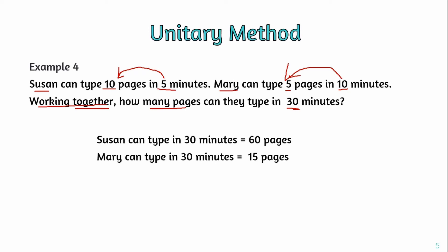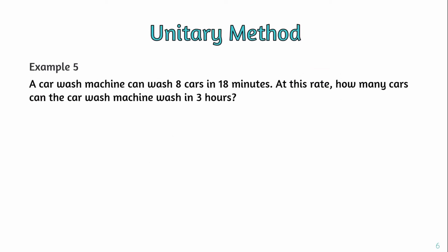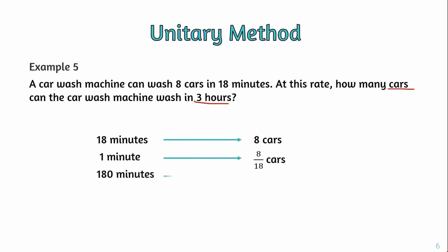At this rate, how many cars can the car wash machine wash in 3 hours? In our question, the car wash machine takes 8 minutes to wash one car. So in 3 hours, that is 180 minutes, divided by 8 minutes per car. Then 10 into 8 equals 80 cars. So the answer is 80 cars.